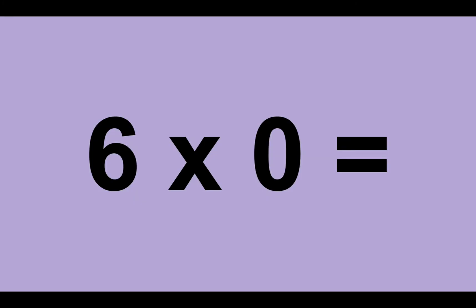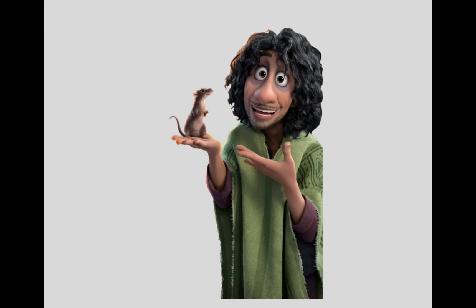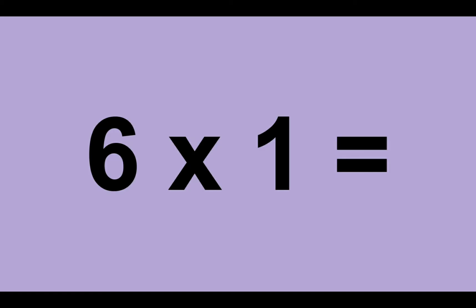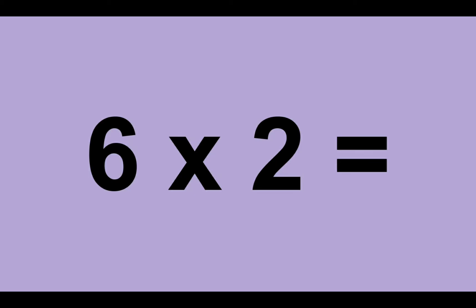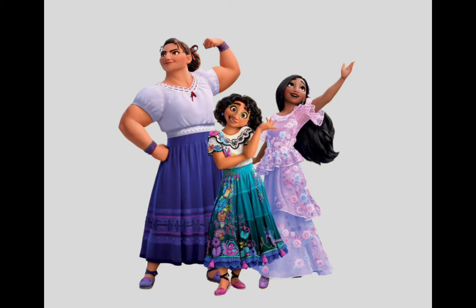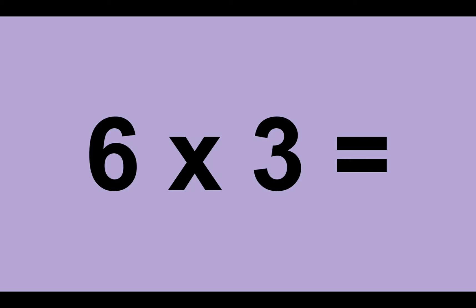Six times zero equals zero. Six times one equals six. Six times two equals twelve. Six times three equals eighteen.